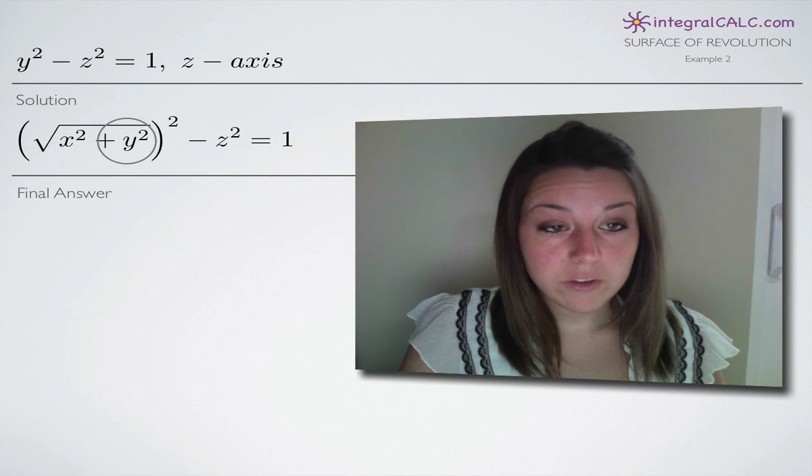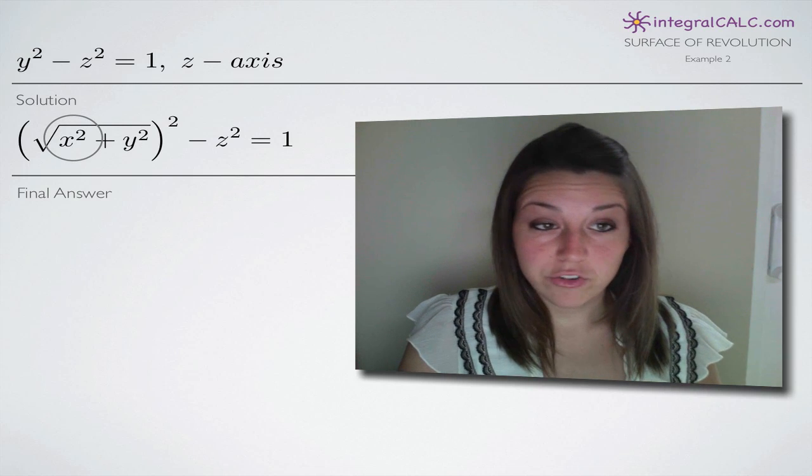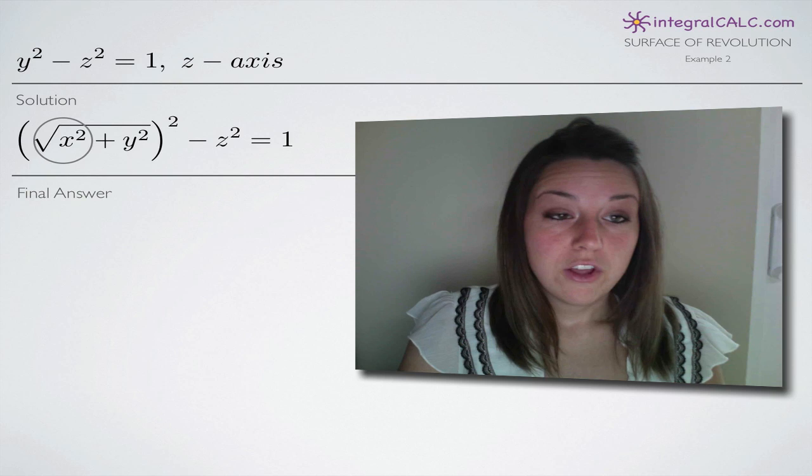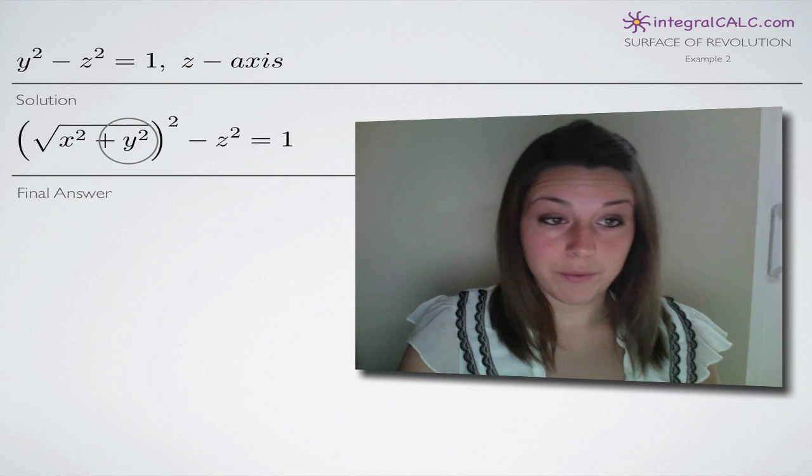You write out x plus y. Both of those terms are going to end up being squared. This is just kind of the formula for surface of revolution. So you replace y with x plus y to get that third variable in there.